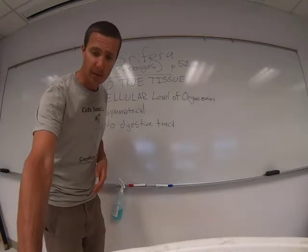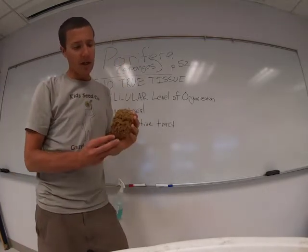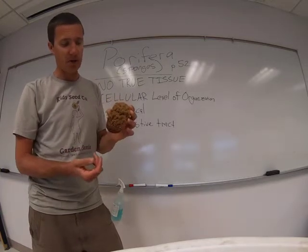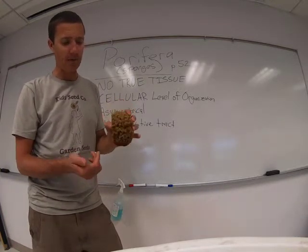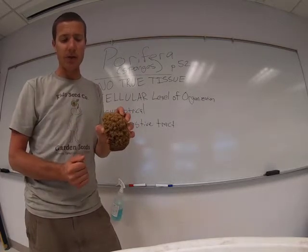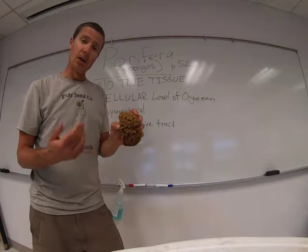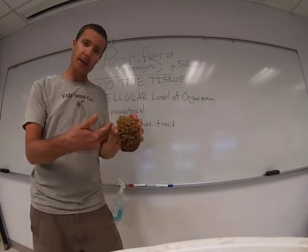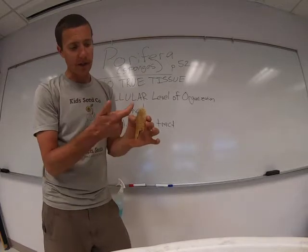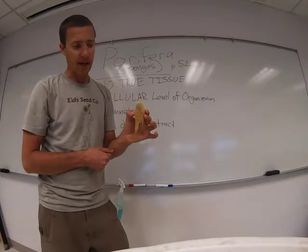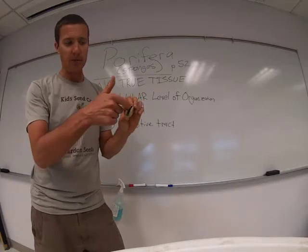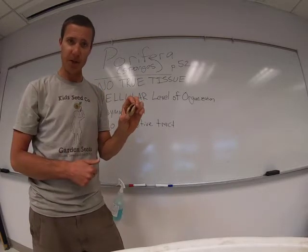I've got a couple of examples for sponges. This sponge here, you can see this — it feels like a sponge you might use in the shower. One of the things you can see on the outside are these holes, so those are called the porosites. That's where water flows into the sponge. I'm going to switch to this one real quick. Here you can see the porosites on the outside as well. The central portion of the sponge is hollow, so that's called the spongocele.